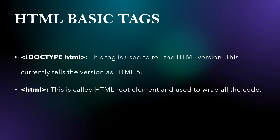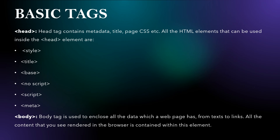Now let us see what are the basic tags of HTML. Firstly, the doctype HTML tag — we use this to declare the HTML version, and currently the version is HTML5. The HTML tag is the root element in which all the code is wrapped. The head tag contains metadata, title and page CSS. All the HTML elements that can be used inside the head element are: style, title, base, no script, script and meta.